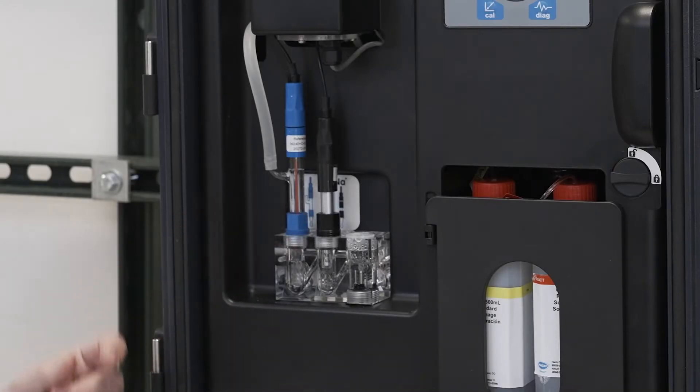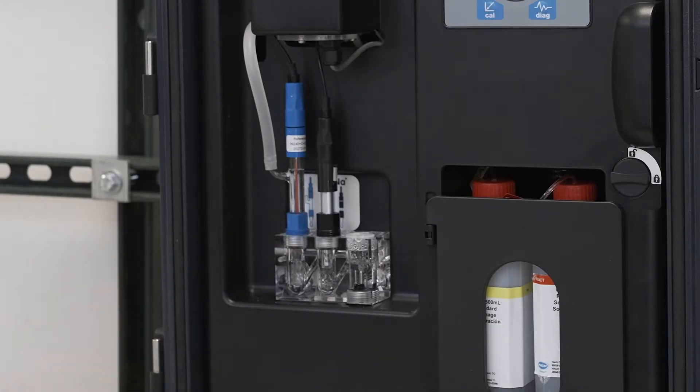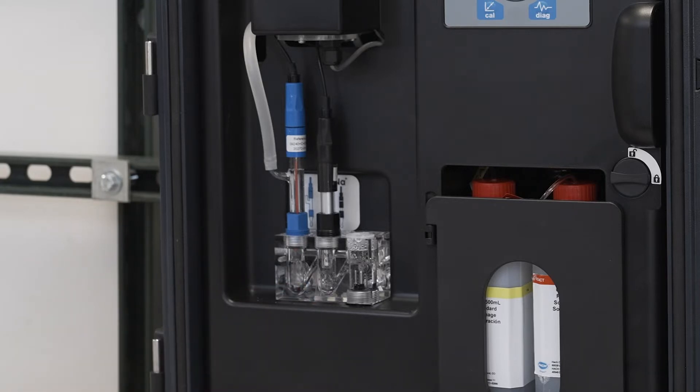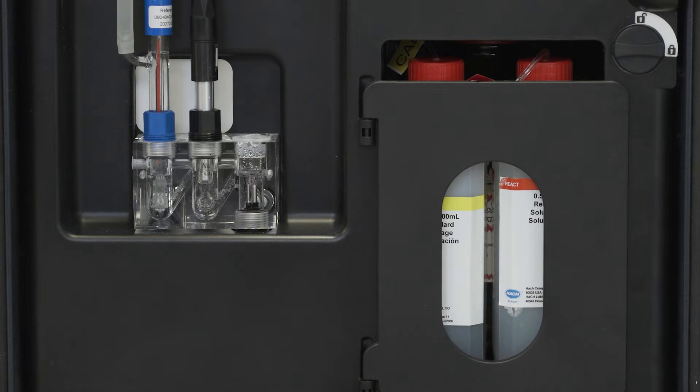Traditionally, the electrode has been removed from solution and placed in hydrofluoric acid to etch a new layer on the sodium electrode. Hawk provides a simpler way of doing this.